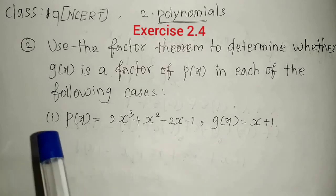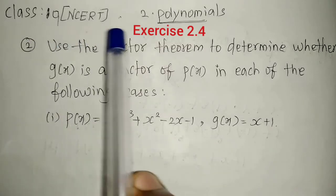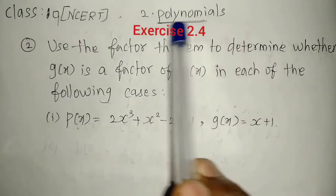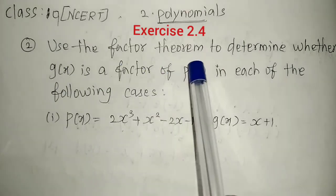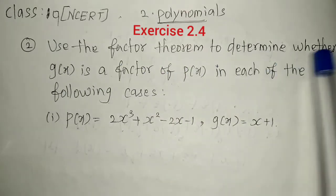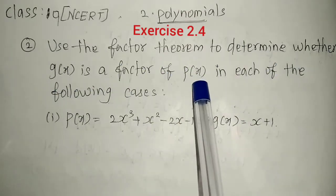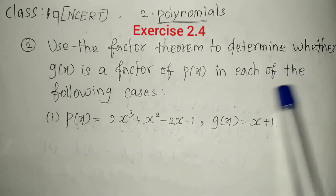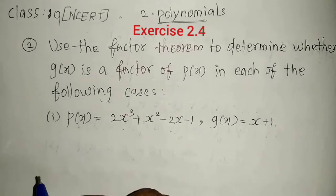Welcome to the channel. Today we are going to see Class 9 NCERT Chapter 2, Polynomials. The question asks us to use the Factor Theorem to determine whether g of x is a factor of p of x in each of the following cases. We have three subdivisions and we will see them one by one.